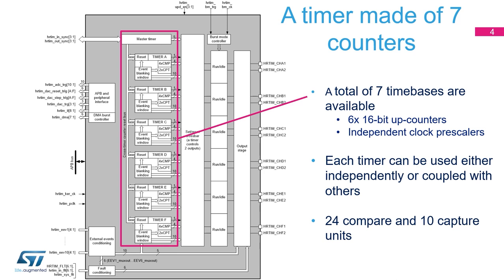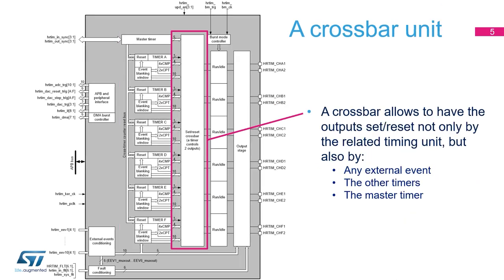Although we talk about a single HR timer, it is actually made up of seven 16-bit counters that can either be used independently or synchronized, each with an independent clock prescaler. It is equipped with a total of 28 compare and 12 capture units, and can control up to 12 outputs. A large central crossbar unit allows the output pairs to be controlled not only by the related timing unit, but also by any external event, the other timing units, and the master timer.